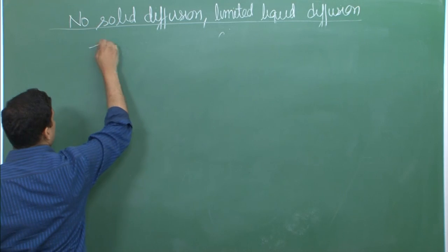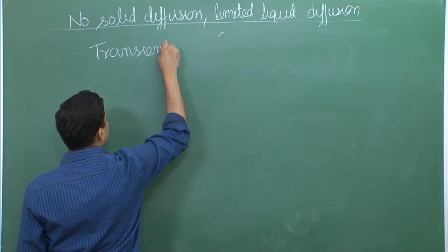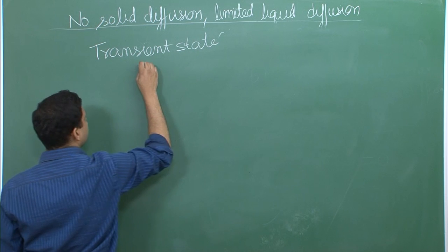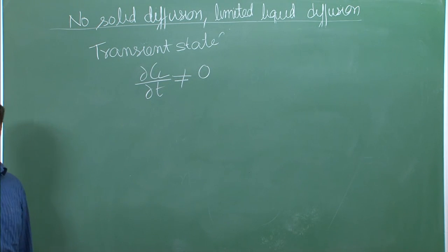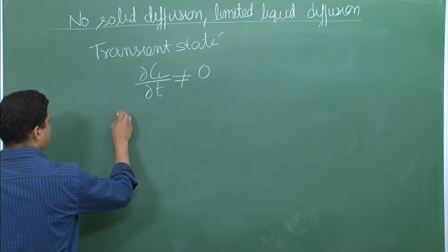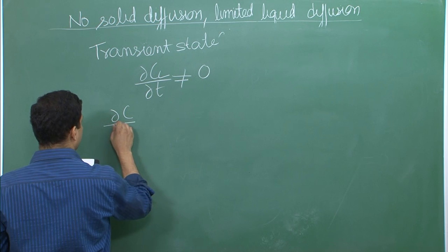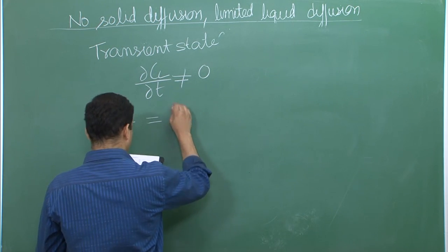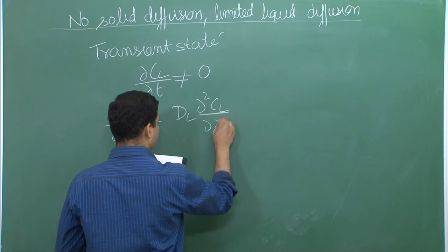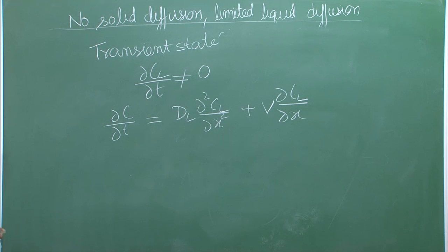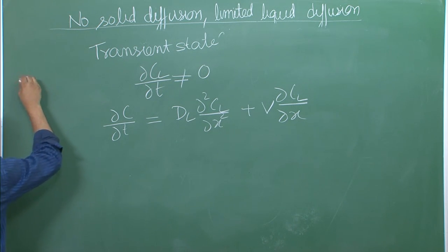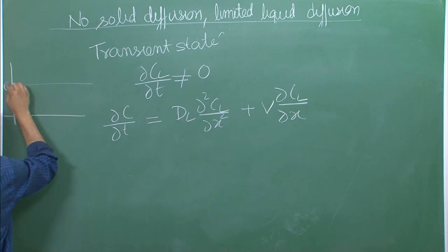Now what is the non-steady-state or transient condition? It is simply because del C_L over del t is not equal to zero — this value is finite and remains in the equation. The full diffusion equation with all terms must be retained: D_L del²C_L/del x² + V del C_L/del x = del C_L/del t. We cannot cancel out any of these terms.